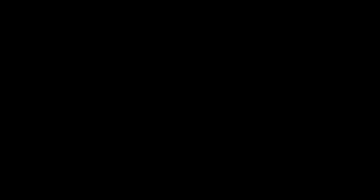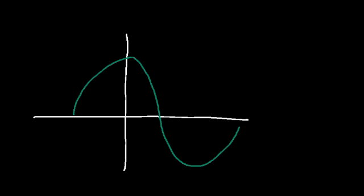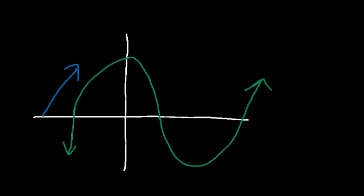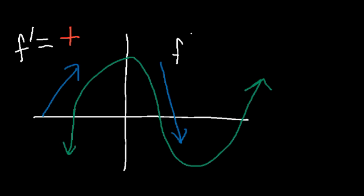Whenever you have a horizontal line, the function is constant, so the first derivative is equal to zero. So let's say we have a graph that looks something like this. In the first region the function is increasing, so the first derivative is positive. Then it's decreasing, so the first derivative is negative. And in the third region it's increasing again, so the first derivative is positive.